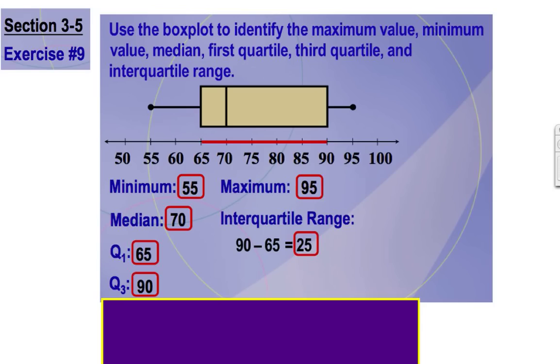Now that means that between this location, between this location right here, our minimum, and our quartile number one, we have 25% of our data. And between our quartile one and our median is another 25% of our data. And between the median and quartile three is 25% of our data. And last but not least, between our quartile three and our maximum is 25% of our data.